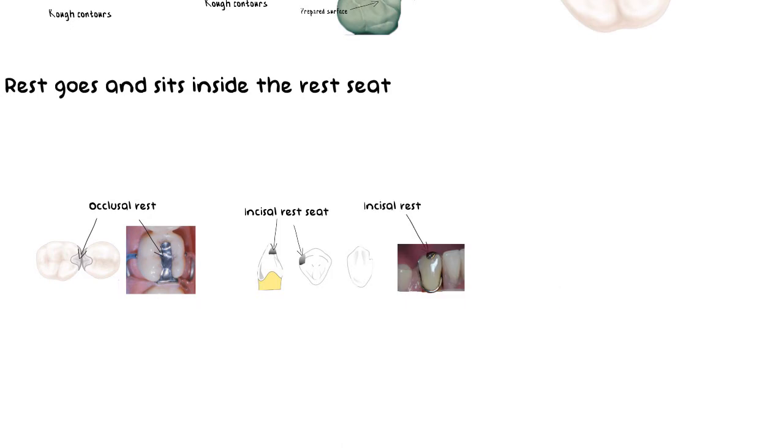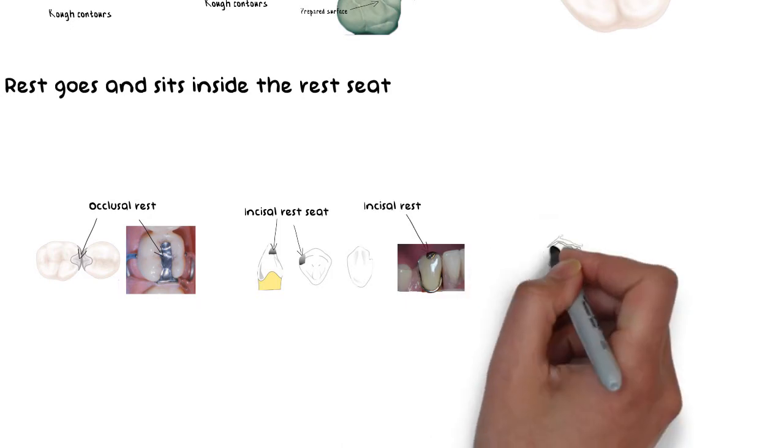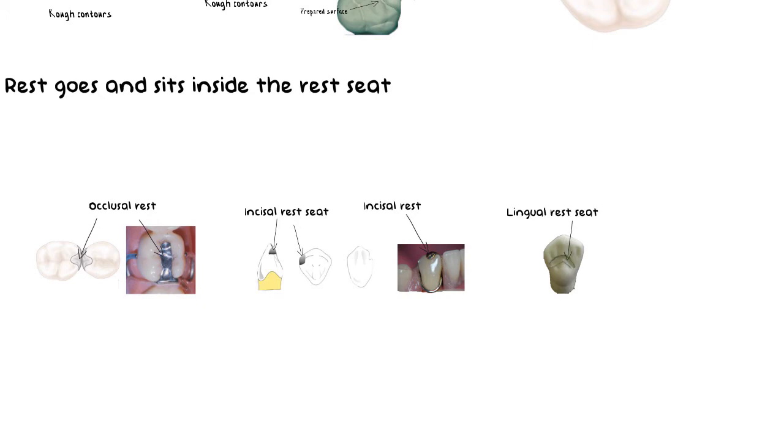And if the rest seat is located on the lingual surface, as in some cases, then the rest will be known as the lingual rest. There are also other types of rest like the proximal rest, the internal rest which will be discussed in my other lecture. But for now, understanding the basic concept of rest and its design is crucial.